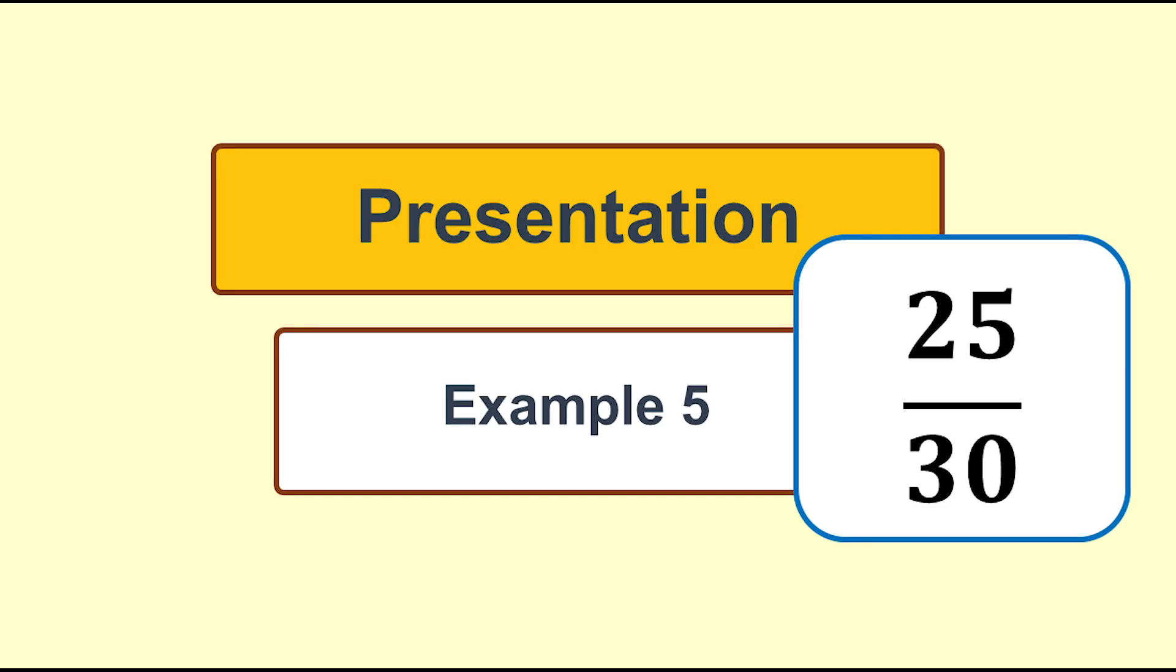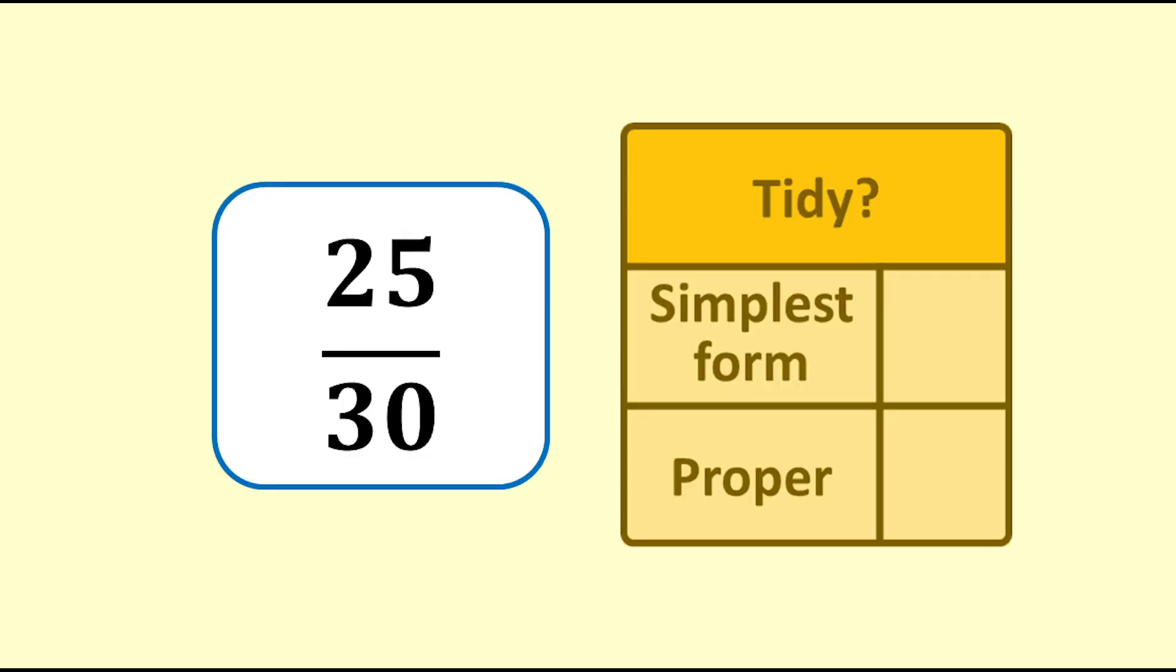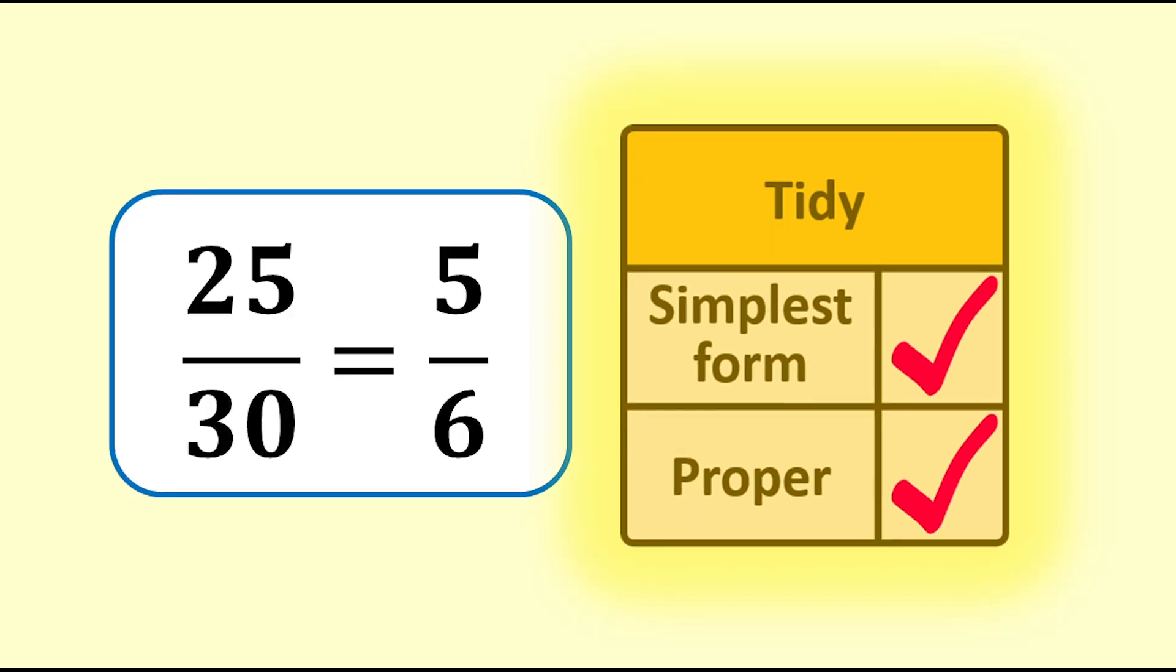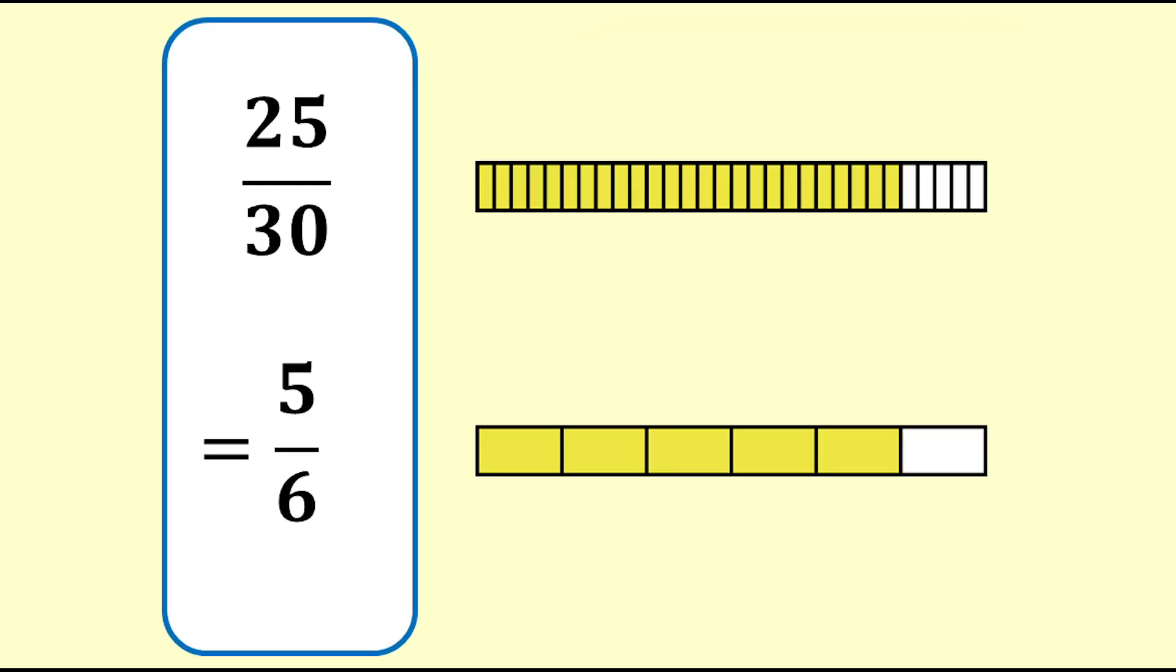Example 5, 25 thirtieths. Is 25 thirtieths tidy? No, it is not in simplest form, as 5 goes into 25 and into 30. It is a proper fraction, as 25 is less than 30. We simplify 25 thirtieths by dividing both numbers by 5, giving 5 sixths. 25 thirtieths equals 5 sixths.